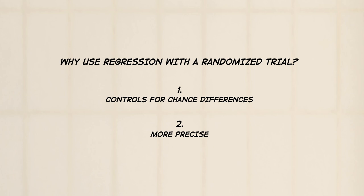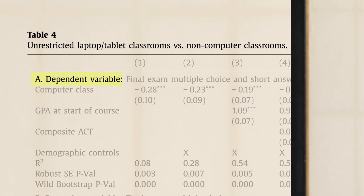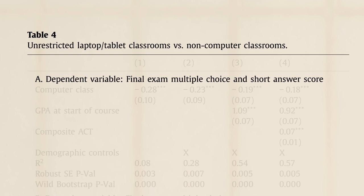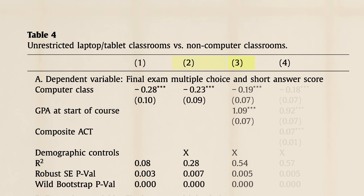The dependent variable in this study is the outcome of interest. Since the question at hand is how classroom electronics affect learning, a good outcome is the economics final exam score. Each column reports results from a different regression model.